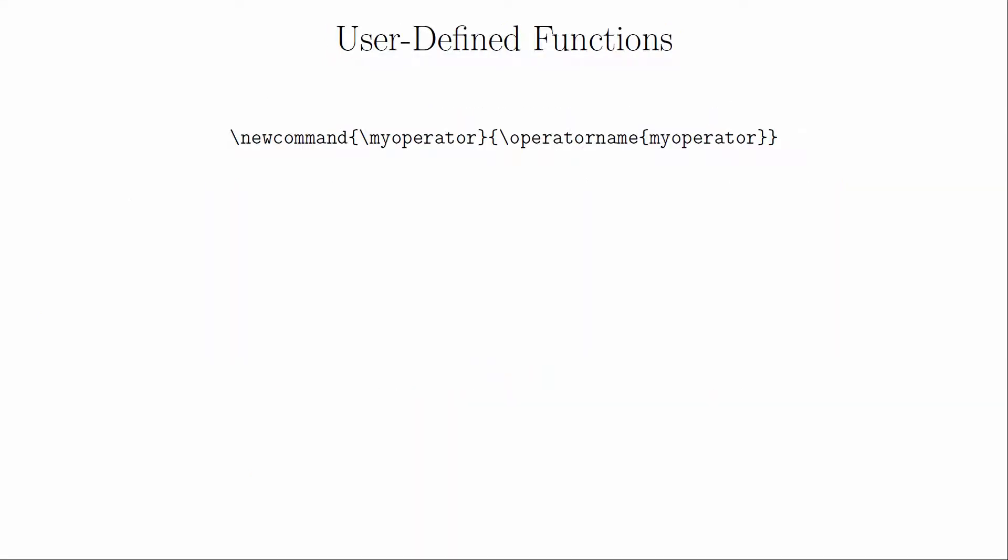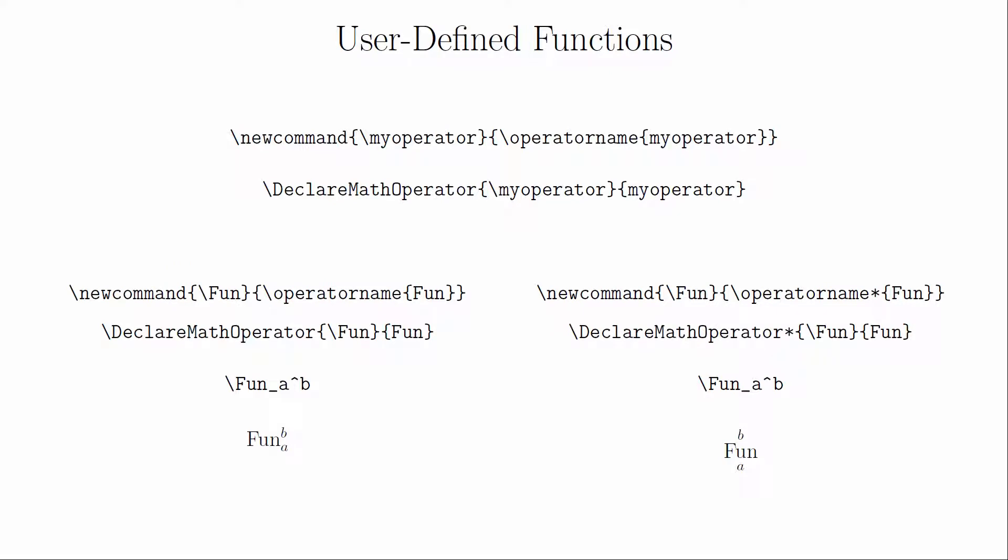You can use \newcommand with the \operatorname command, but there's another method for declaring functions you should be aware of: the \DeclareMathOperator command. They both do the same thing, but you'll probably see \DeclareMathOperator more frequently on TeX Stack Exchange. It's worth pointing out that there's a starred version of these commands which changes the behavior of superscripts and subscripts. When you're in display style math mode, instead of being printed to the right, the starred versions will typeset them directly above and below.